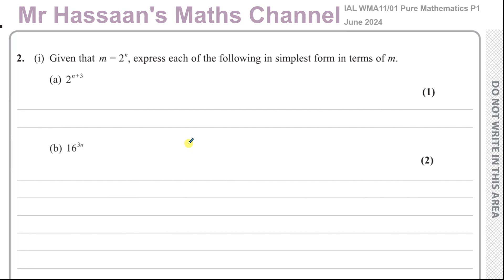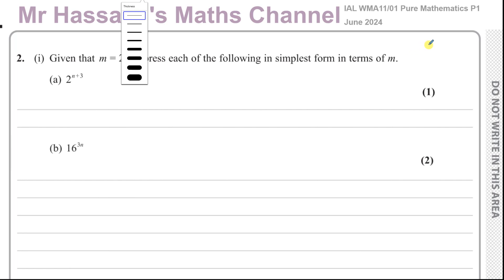This question is about indices and it says that given that m equals 2 to the power of n, express each of the following in simplest form in terms of m. So basically what we have to do is break these down such that we're left with 2 to the power of n by itself.